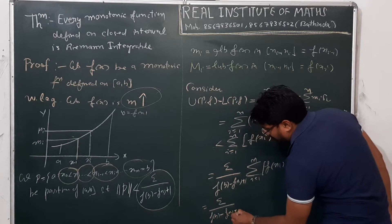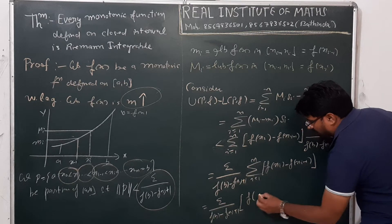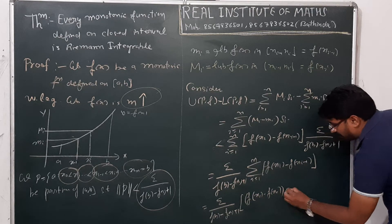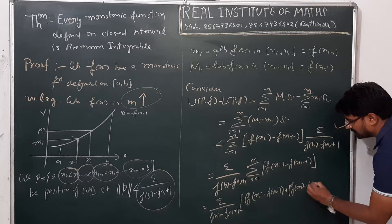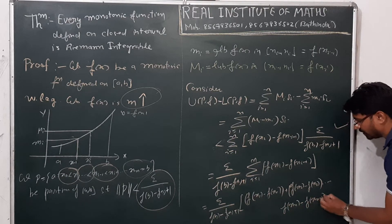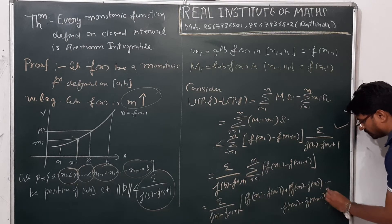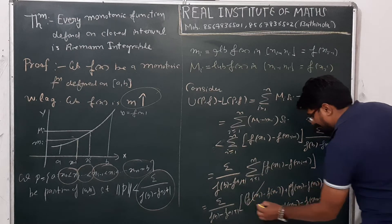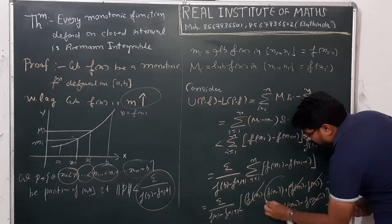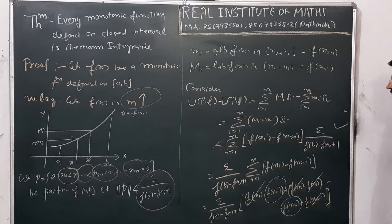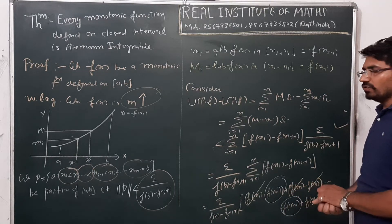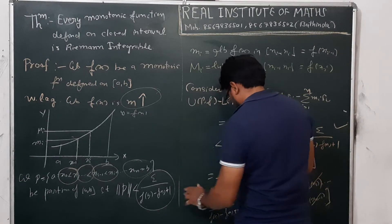Substituting values and running from 1 to n, we get epsilon over f(b) minus f(a) plus 1, times the sum: f(x_1) minus f(x_0), then f(x_2) minus f(x_1), and so on up to f(x_n) minus f(x_{n-1}). The intermediate terms cancel out — this is a telescoping sum — leaving f(x_n) minus f(x_0), which is f(b) minus f(a).